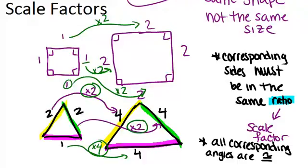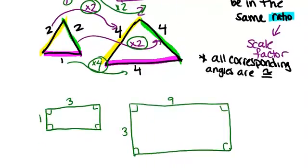Let's just look at one more example of similar polygons. In this last example, we have two rectangles, and these two rectangles are similar, because if you look at their corresponding sides, like the 1 and the 3, the ratio between those two sides is 3, so the scale factor is 3.